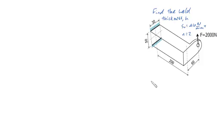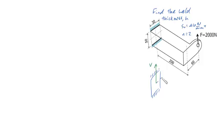The first thing we're going to do is draw a free body diagram of the weld itself, and it'll look something like this. We know we're going to have a shear force acting on this, which I will call V. We're also going to have a bending moment about the x-axis, which I will call M. And we're also going to have another moment due to torsion about the positive z-axis, which I will call T.